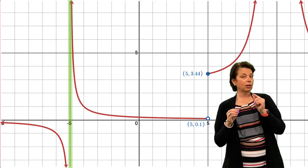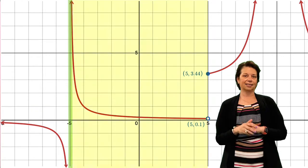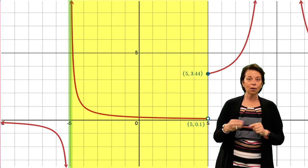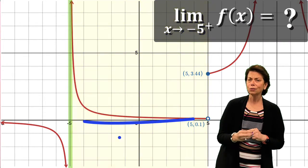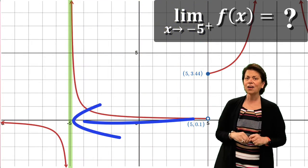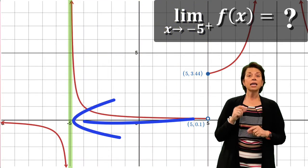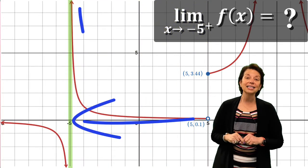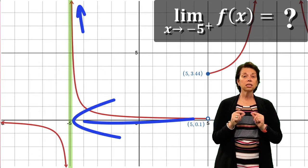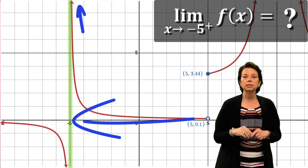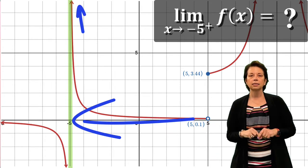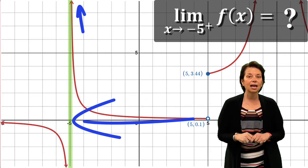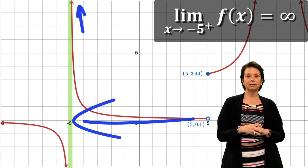If I look at the right-hand side of negative 5 and see as the graph gets closer and closer to negative 5, the function values are exploding to positive infinity. So we would say the limit as x approaches negative 5 from the right-hand side is actually infinity.